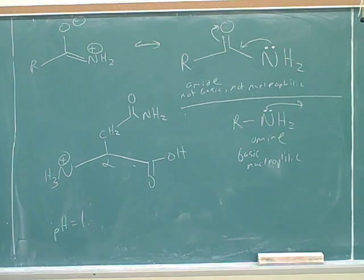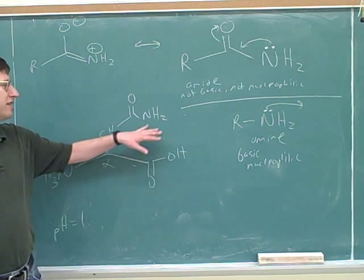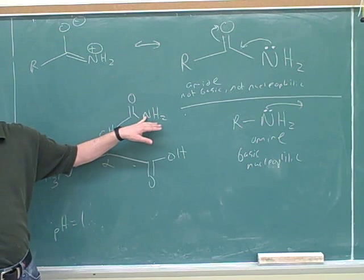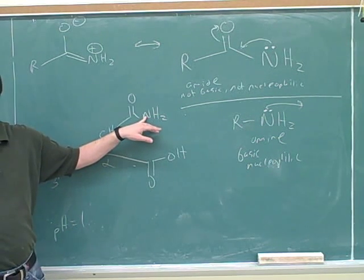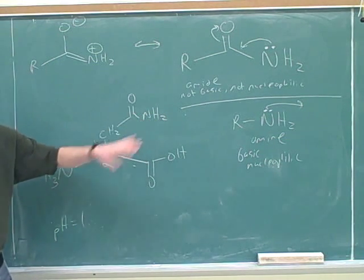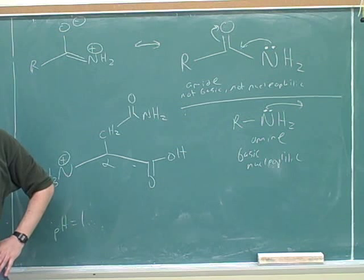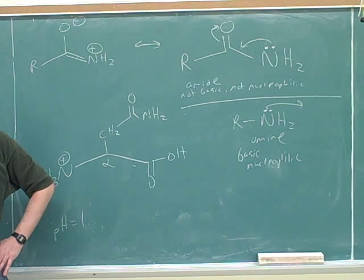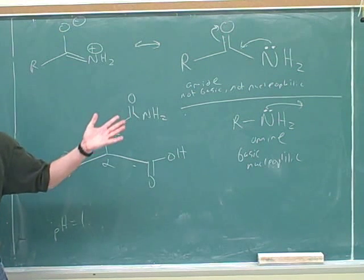So going back to asparagine, there's a dash, which means that this is neither acidic nor basic. We might have thought it might have been basic because it has a nitrogen, but now we wouldn't think that because we know it's an amide nitrogen. So even without the table, we would have known this is not basic. Going back to tyrosine, does the table tell us that tyrosine has an acidic or a basic side chain? There's no c. Acidic.